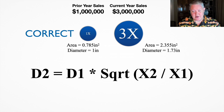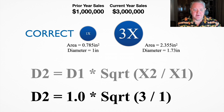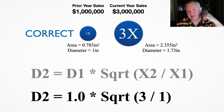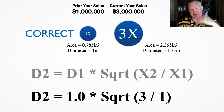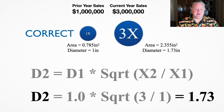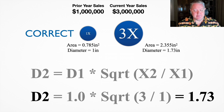In our calculation, the diameter of the first circle was one inch — so it's 1.0 — times the square root of the new data, which is 3 million, over the data of the first circle, which is 1 million. Here I've abbreviated that as 3 over 1, because that's the same result. And so what we end up with by doing that formula is 1.73 inches — that's the diameter correctly of that second circle, which is three times larger in area.